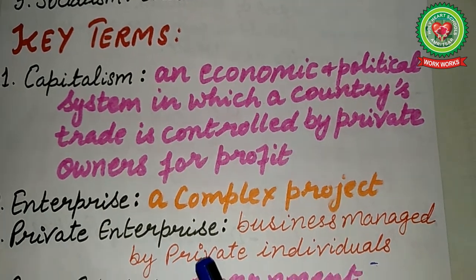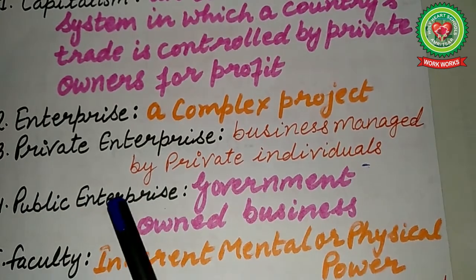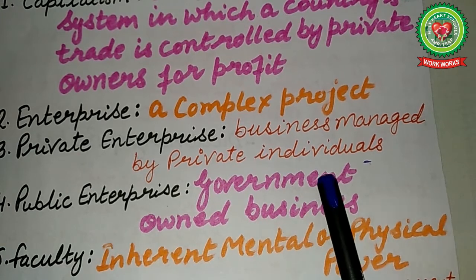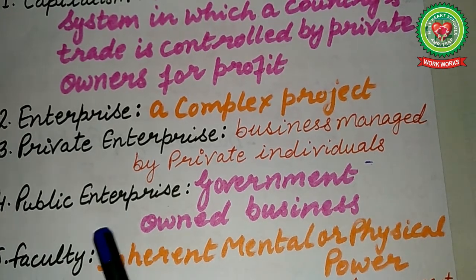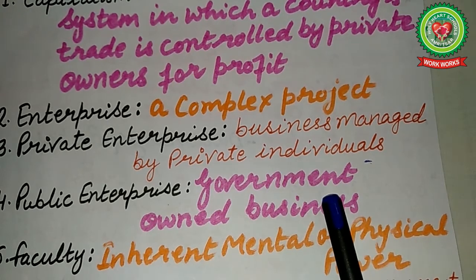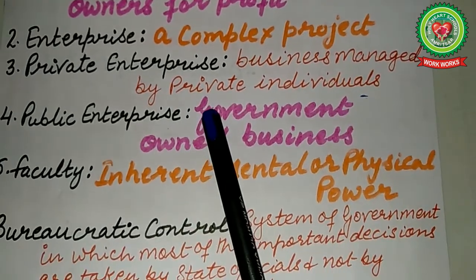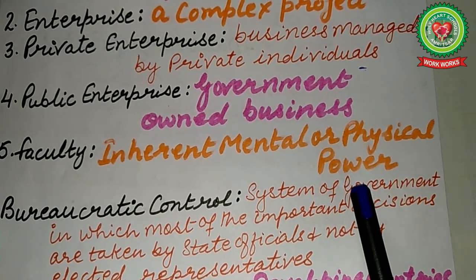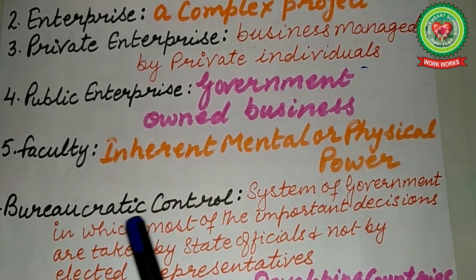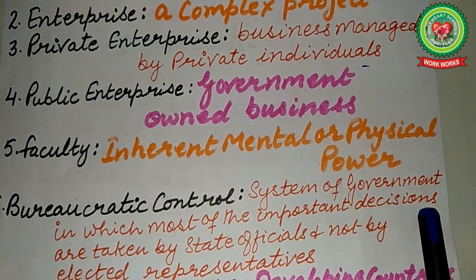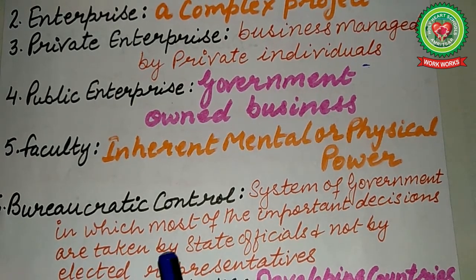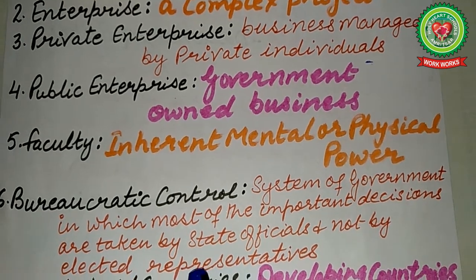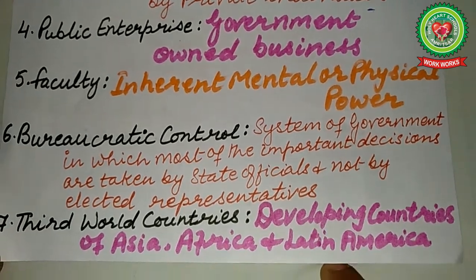Private enterprise means business managed by private individuals. Public enterprise means government-owned business. The next key term is bureaucratic control — a system of government in which most of the important decisions are taken by state officials.